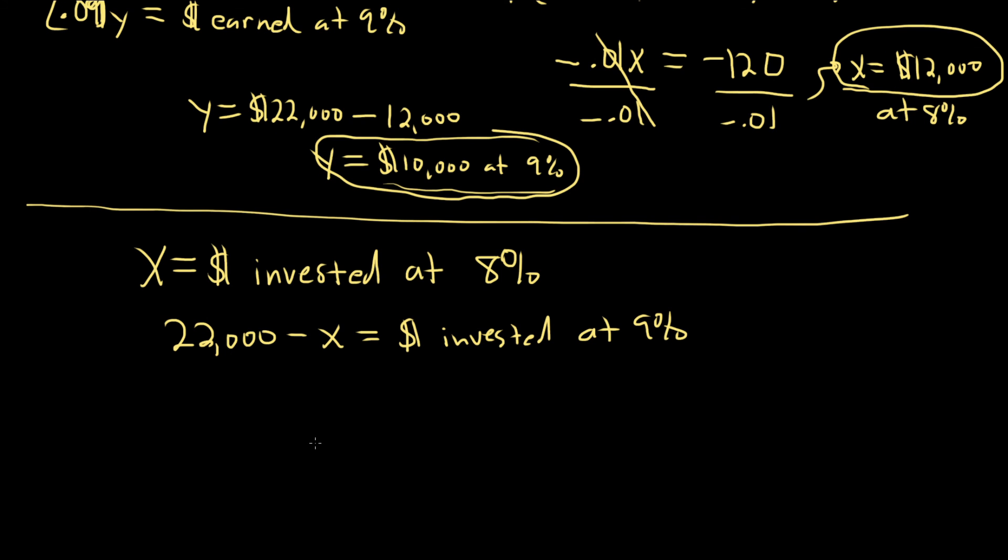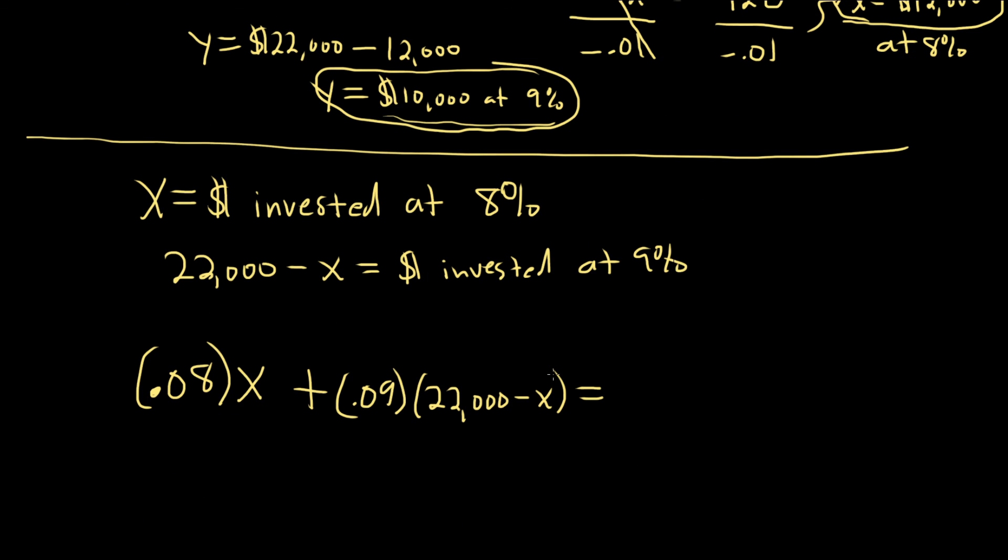So then you create the equation for the interest earned. So it would be 8% of the money invested at 8% plus 9% of the money invested at 9%. And that's equal to the total money earned, which was $1,860. Good stuff.